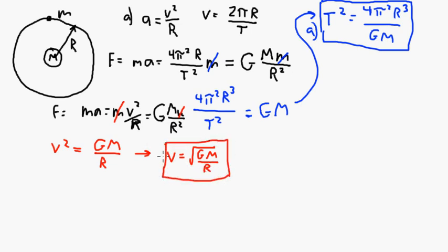Part C, potential energy of the system. That is, if possible, even easier than the part we just did, because we simply plug in our potential energy equation. So that is U equals negative capital G, big M, little M over R. And that right there is our answer. There is nothing more to be done.